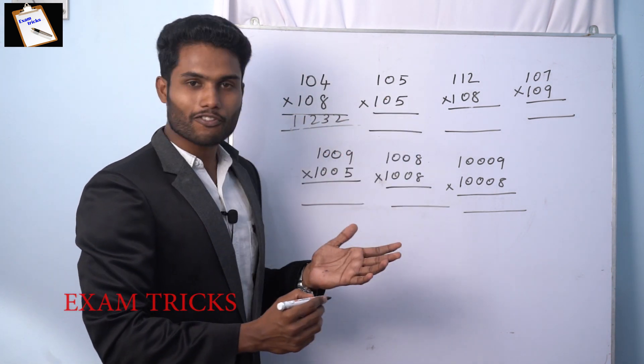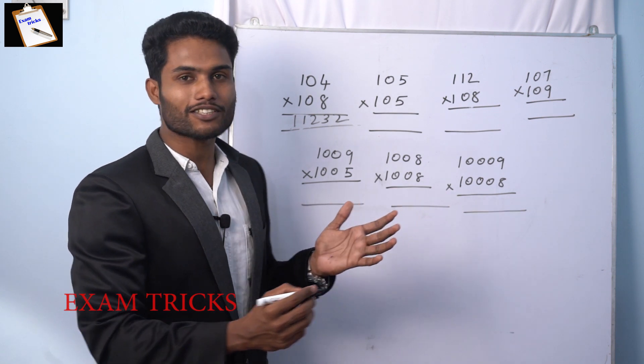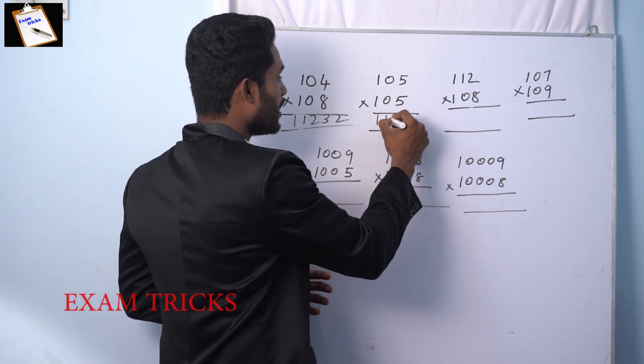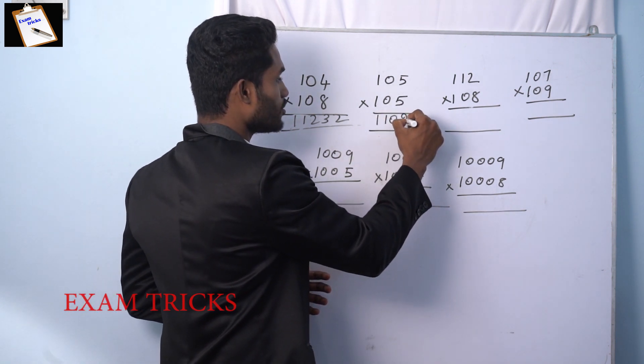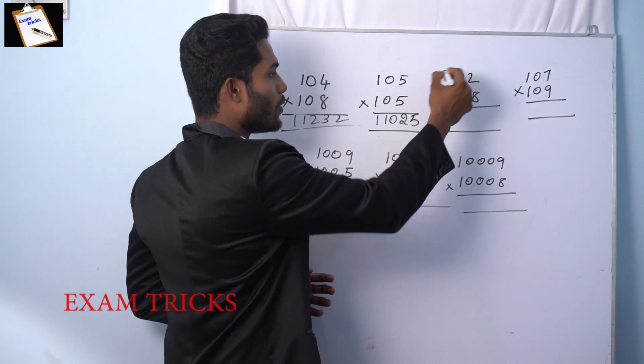Then 105 into 105. Answer: 1, 1, 0, 2, 5.